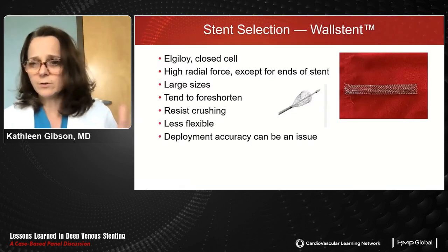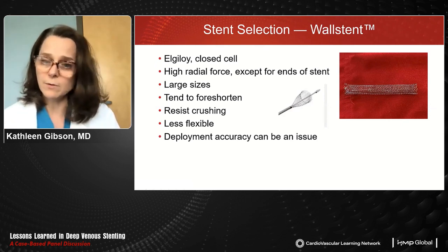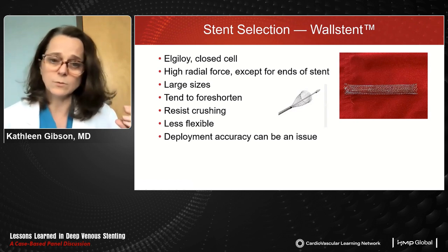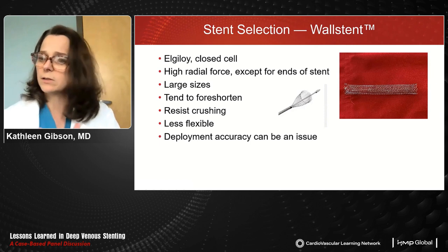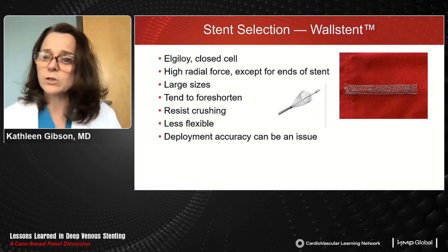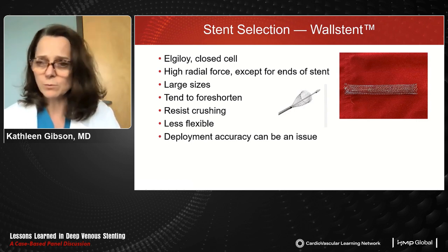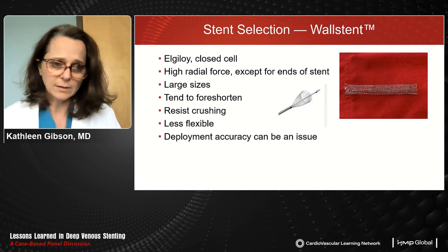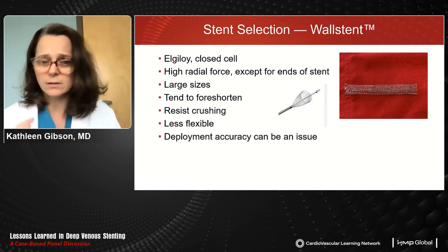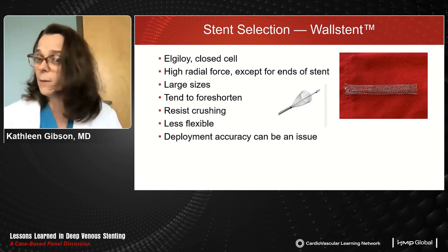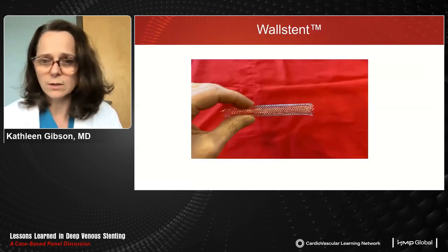When selecting a stent, the Wall Stent is in its own category as an Elgiloy closed-cell stent. It has high radial force except at the ends, which can collapse. It comes in the largest sizes but shorter lengths and tends to foreshorten, which can challenge deployment planning. It's crush resistant but less flexible than other choices. Deployment accuracy can be an issue; however, it can be recaptured and repositioned up to a certain point, which the other stents cannot do.